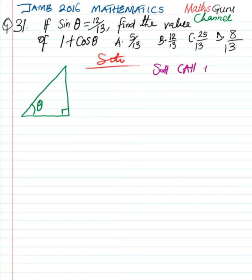Sine is equal to opposite over hypotenuse. So sine theta is, the opposite is here, which is 12, and the hypotenuse is 13. So we do not know the adjacent. Let's just term it x.